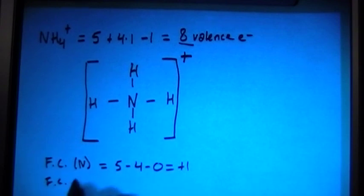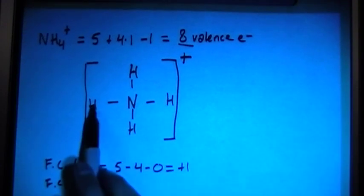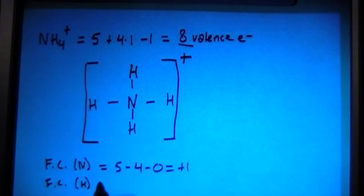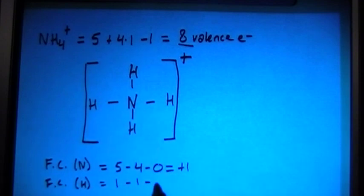Now the formal charge of hydrogen is going to end up being, if you look at this one, formal charge is 1 valence electron brought in minus 1 bond minus non-bonding electrons, and there's none of those, so that's 0.